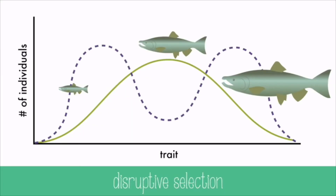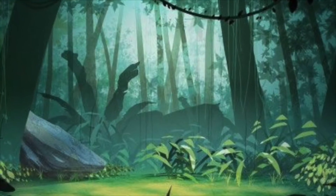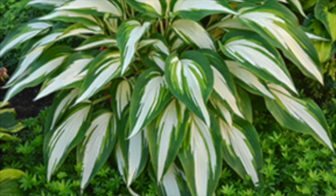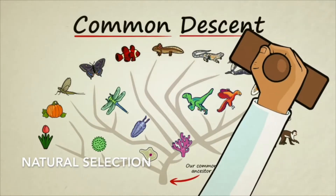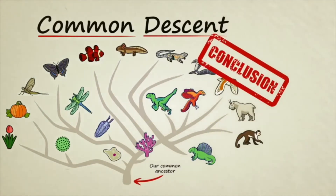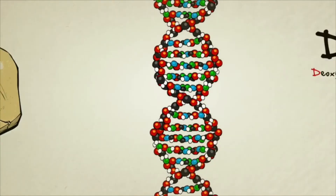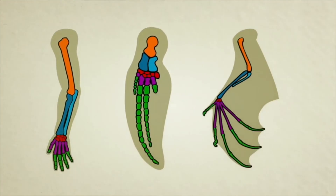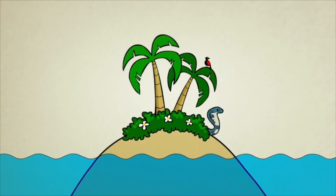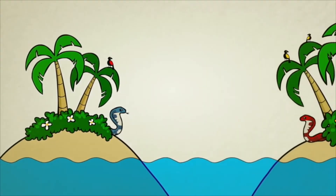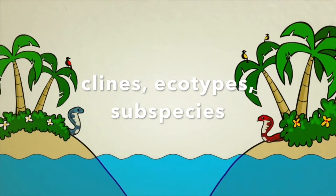Finally, disruptive selection is when both extreme phenotypes are more fit than those in the middle. In an environment with light and dark green plants, individuals with those same colors will survive more than medium-colored ones. Natural selection can also alter genetic variation among local populations due to differences in environmental conditions, in the process of genetic differentiation. Species with a wide geographic distribution encounter different environmental conditions that can give rise to variations in morphological, physiological, and behavioral characteristics, as seen in clines, ecotypes, and subspecies.